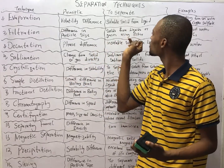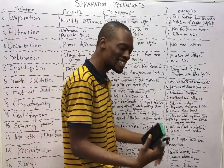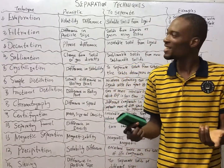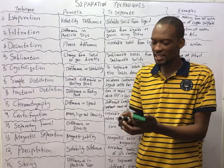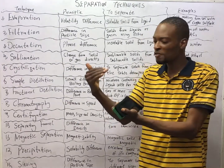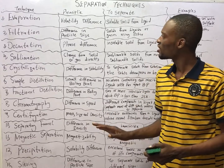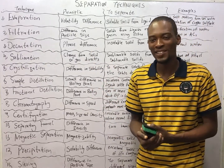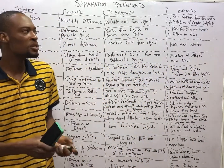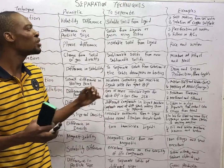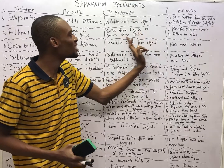Evaporation is used to separate soluble solid from liquid. Filtration is another common separation technique. What do you filter? If you want to remove one component from another, you simply filter. Filtration works on the principle of difference in particle size. If you have a mixture where the sizes of particles are different, you simply filter. Filtration is used to separate solids from liquids or gases using a filter.